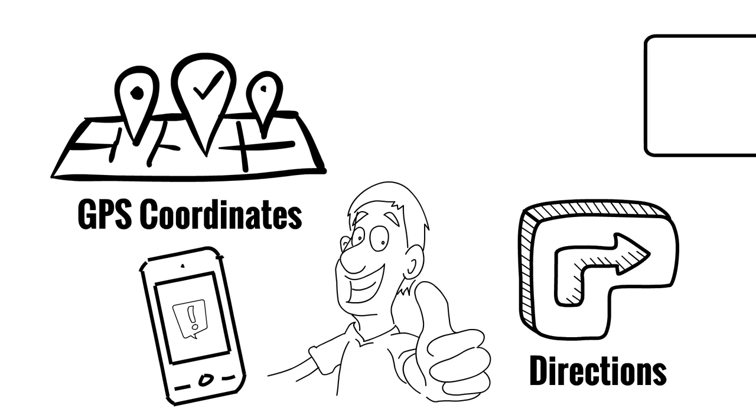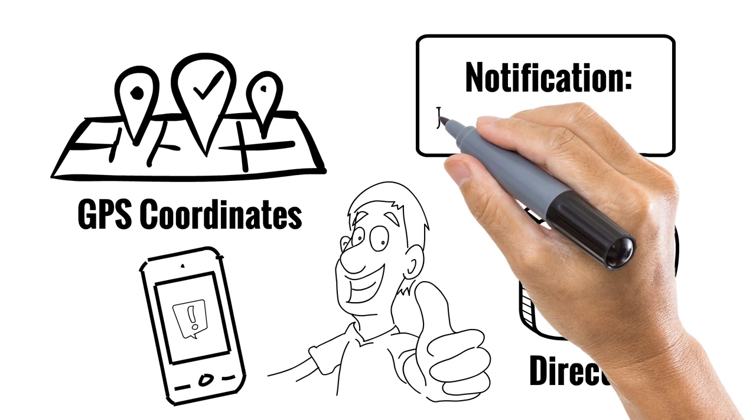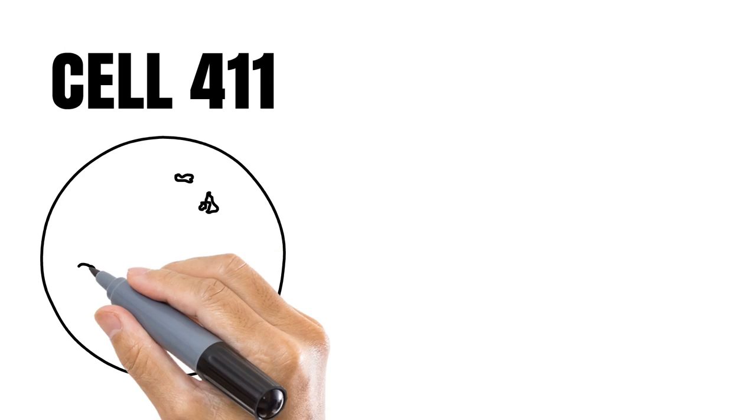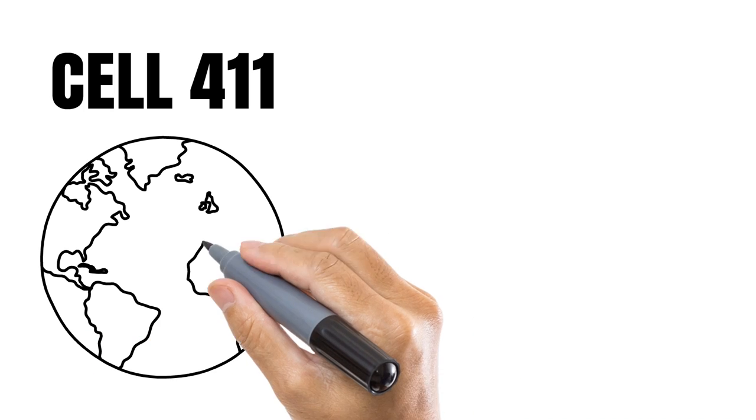You'll be notified of an ETA, who's coming to help you and when they'll arrive at your location. All this happens within seconds. Cell 411 is changing the way humans are handling emergencies all over the world.